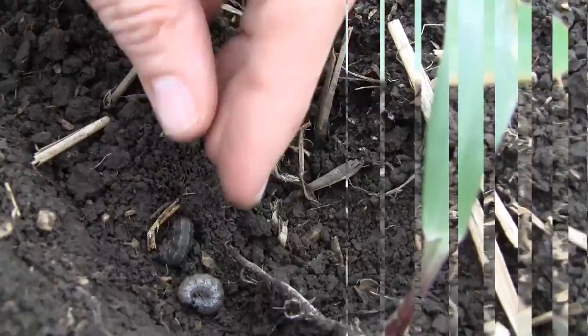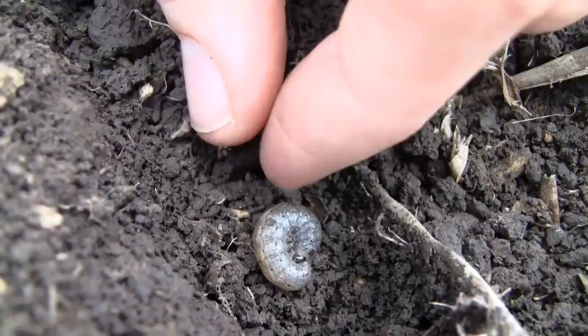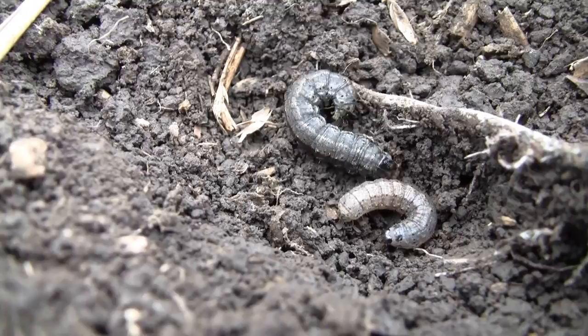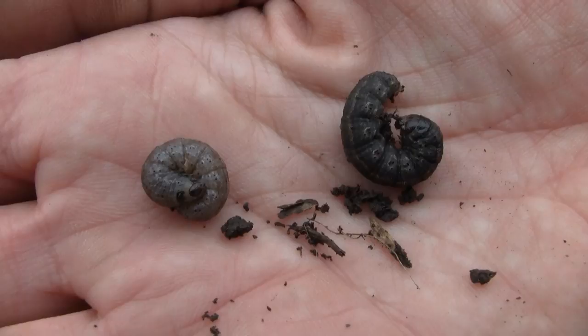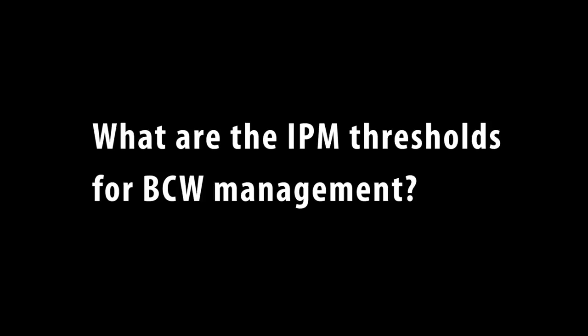It's important to know that fourth instar larvae or larger — the fourth, fifth, sixth instars up to the seventh instar — can cut plants. What we have here in the soil are a fifth instar and a sixth instar. They're a dark, gray, almost greasy looking larvae. But when disturbed or handled, picked up out of the field, they'll curl up into a tight C shape.